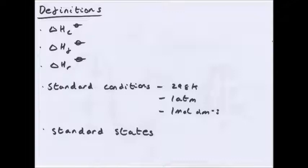The symbol — a circle with a line through it — means standard conditions, which are 298 K (25°C), one atmosphere or 100 kPa, and one mole per dm³ concentration. Standard states mean the state the substance is naturally in — so calcium is naturally a solid and chlorine is naturally a gas.